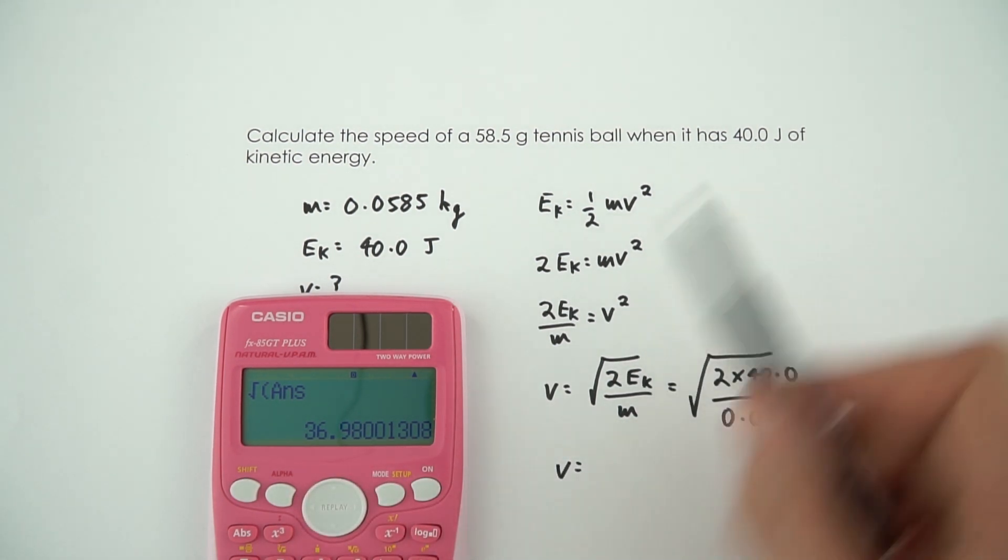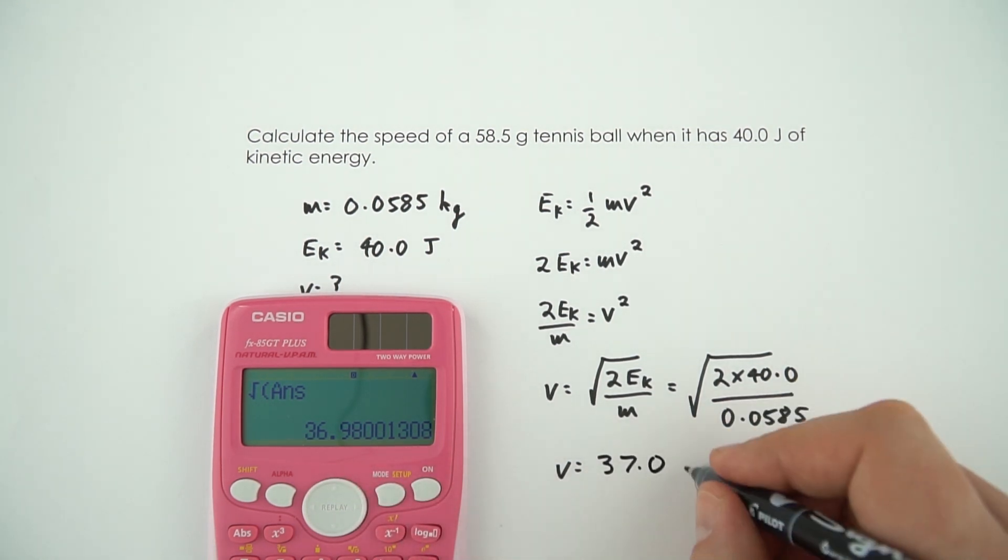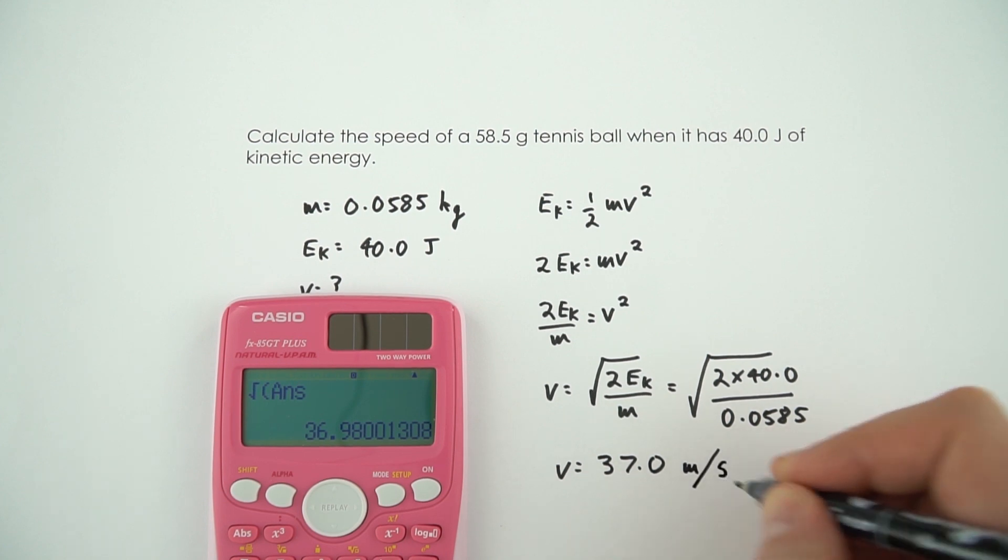And this then gives us a velocity equal to 36.98. I'm going to give my answer to three significant figures. And that means that this rounds up to 37.0. And that is measured in metres per second.